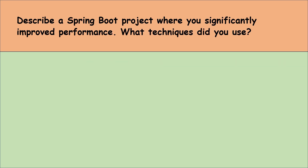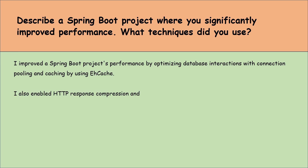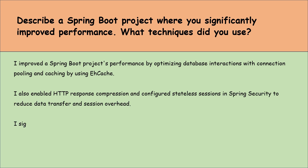Let's move to the next question: describe a Spring Boot project where you significantly improved performance. What techniques did you use? I improved a Spring Boot project's performance by optimizing database interactions with connection pooling and caching using EhCache. I also enabled HTTP response compression and configured stateless sessions in Spring Security to reduce data transfer and session overhead.